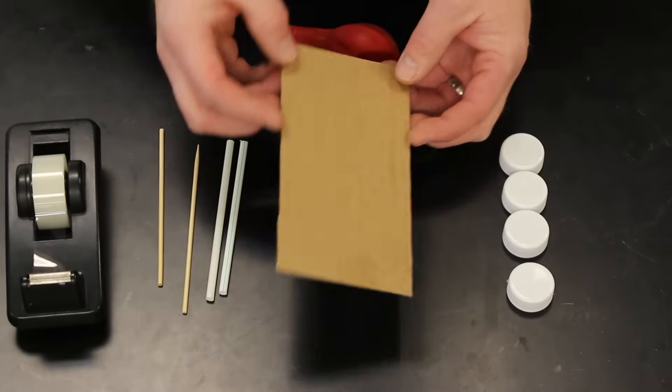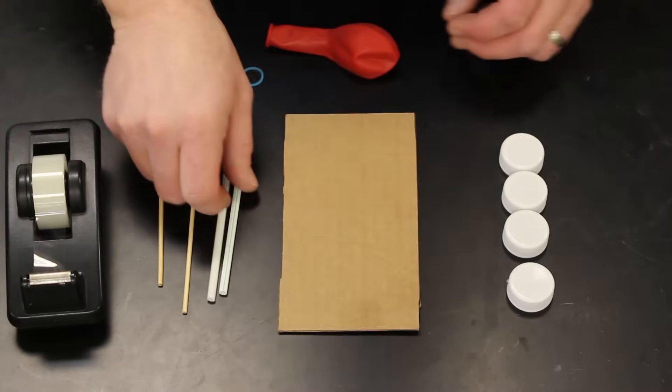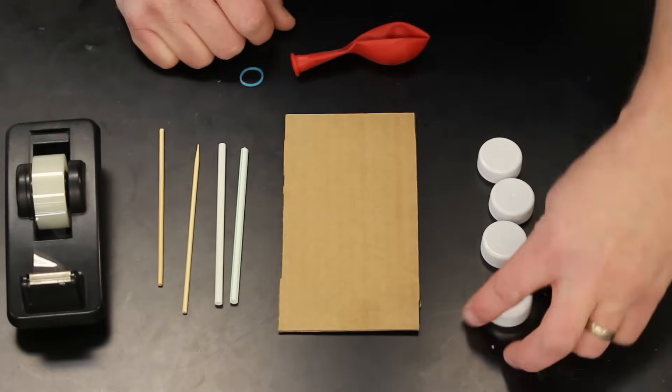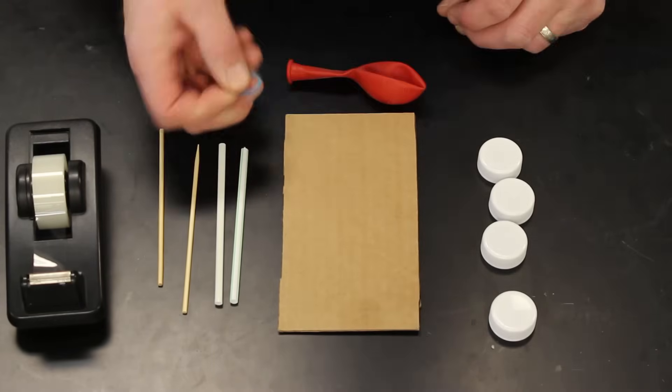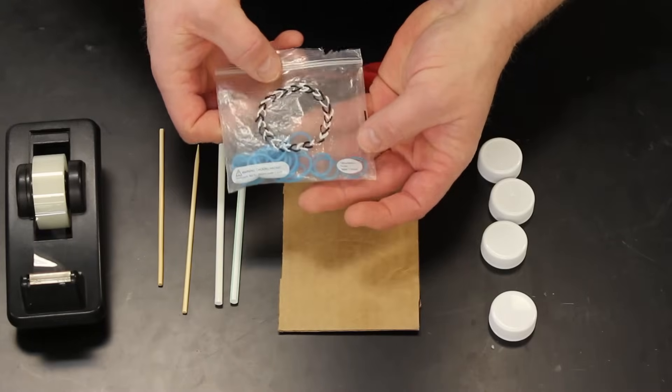What you'll need for this project is a piece of cardboard, roughly 3.5 inches by 6.5 inches. You'll need some straws, bamboo barbecue skewers, plastic bottle caps, a 9-inch balloon, and a small rubber band. I found that these bracelet bands work perfectly for this.